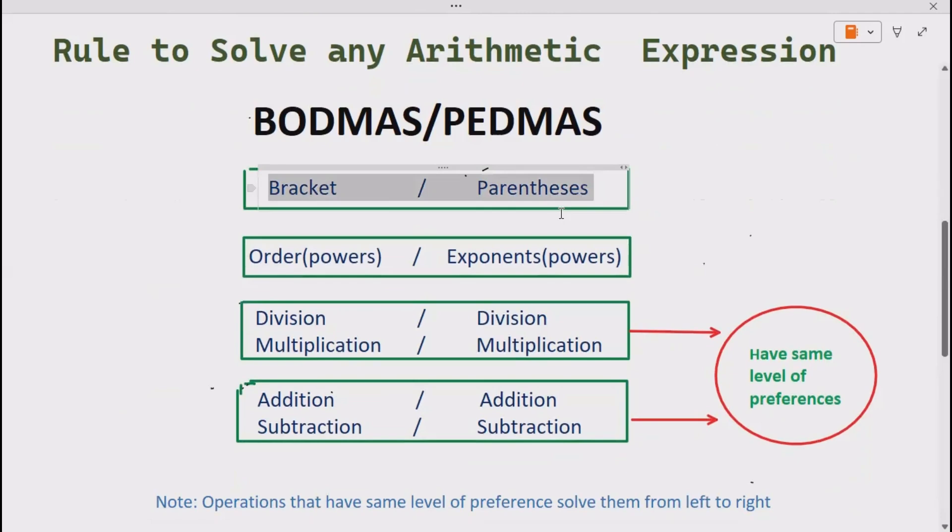Then solve orders, i.e. exponents and powers. Then do division, multiplication, and then addition, subtraction. Remember, division, multiplication and addition, subtraction have same level of preference. What does it mean? It means whenever you are solving an arithmetic expression in which both division, multiplication occur at the same time, solve that operation first that comes first going from left to right.